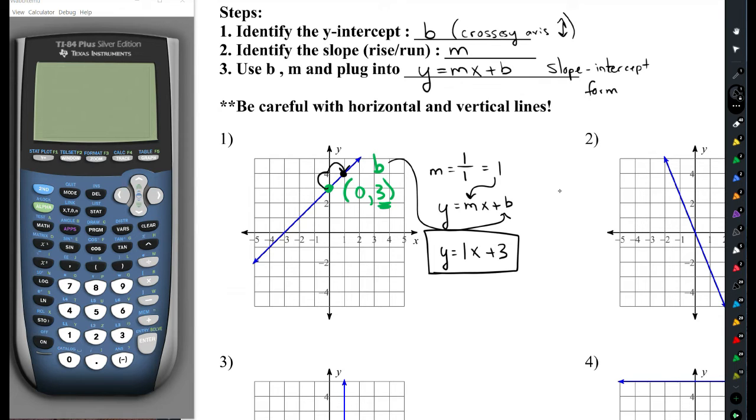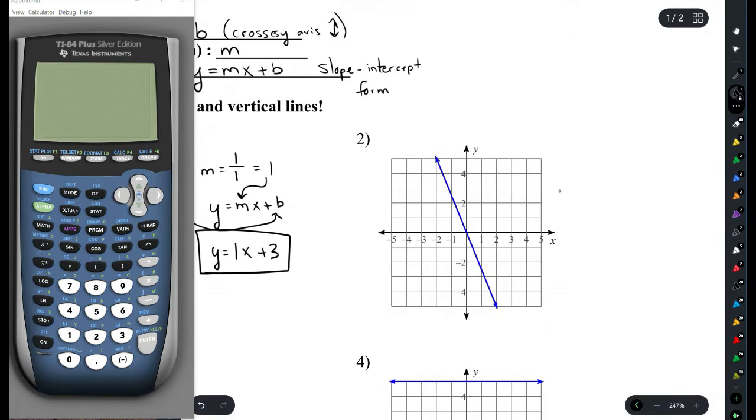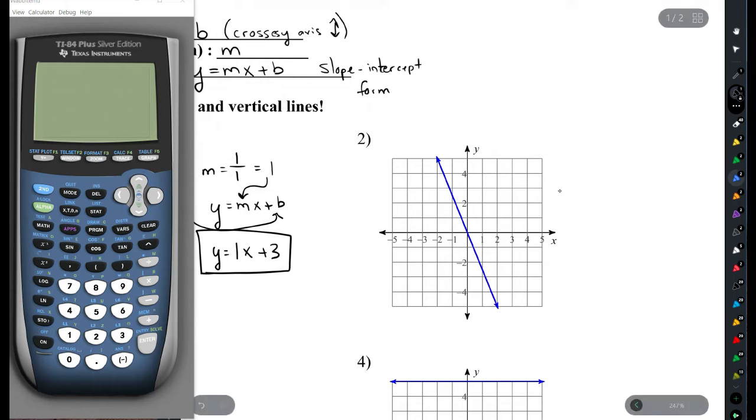It can get a little trickier, like if we look at number 2. We are going to, again, first step, identify the y-intercept, which is right at 0, 0. So, this can be a little funky. That means the b value is 0, so b equals 0.